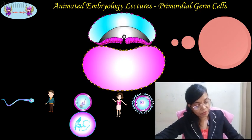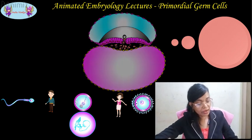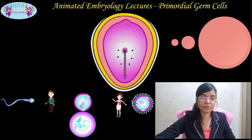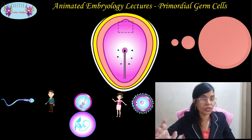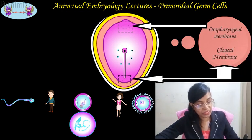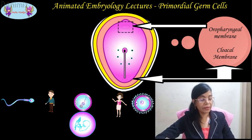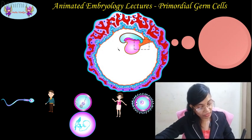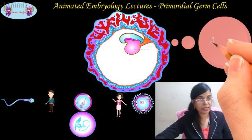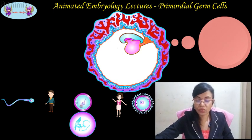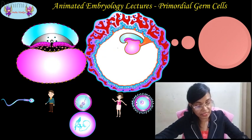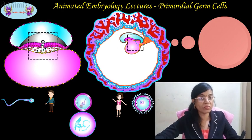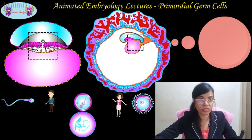The cells of the epiblastic layer move through the primitive pit and start establishing all three germ layers sequentially. At the same time, two additional membranes appear between the newly formed endoderm and ectoderm: the oropharyngeal membrane and the cloacal membrane. By the sixteenth day, when the cloacal membrane appears, the posterior wall of the yolk sac forms a small diverticulum extending into the connecting stalk called the allantois. The cells marked for primordial germ cells move through the primitive pit and come to lie among the cells of the newly formed endoderm in the wall of the yolk sac, near the allantois.